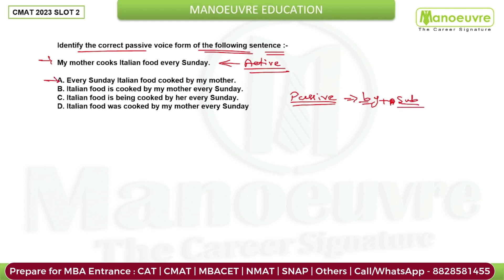Looking at the options: option A has 'by', option B also has 'by', and option C also has 'by', so every option contains 'by'. Now, here the subject is 'my mother'. 'Every Sunday' is not a subject, and 'Italian food' is the object.